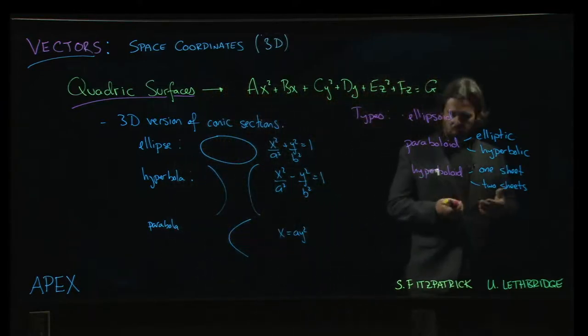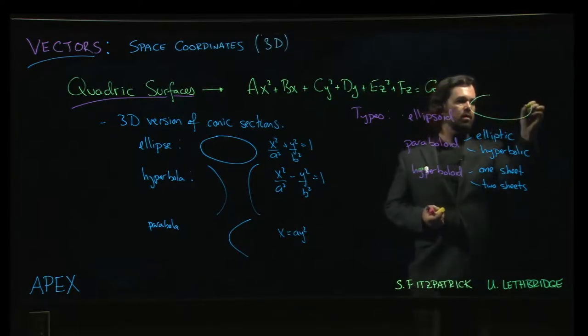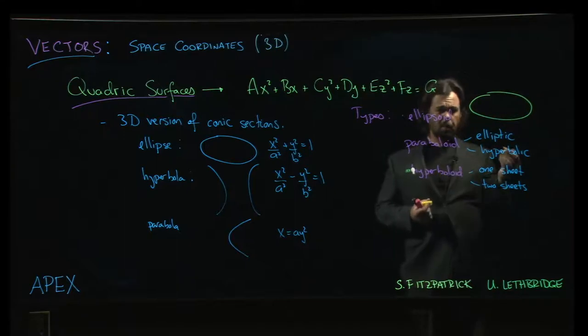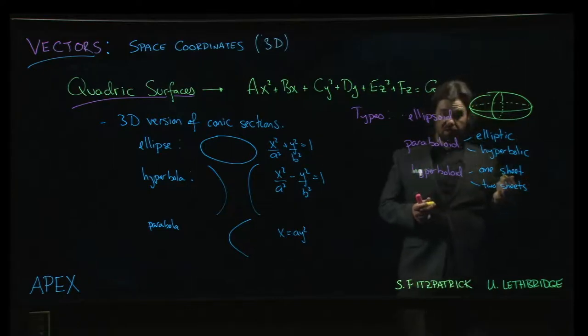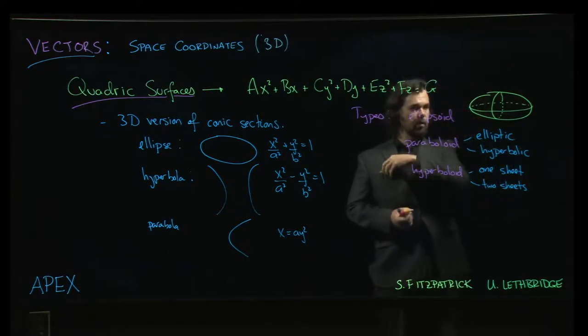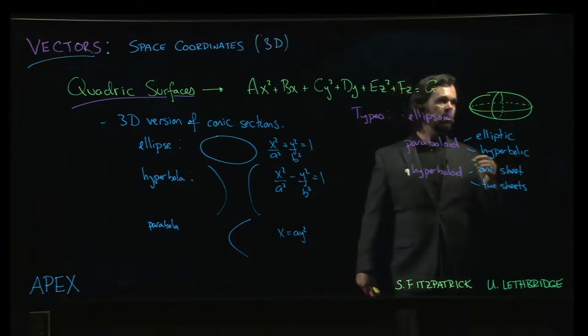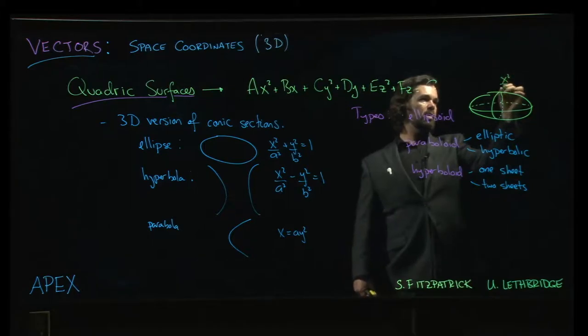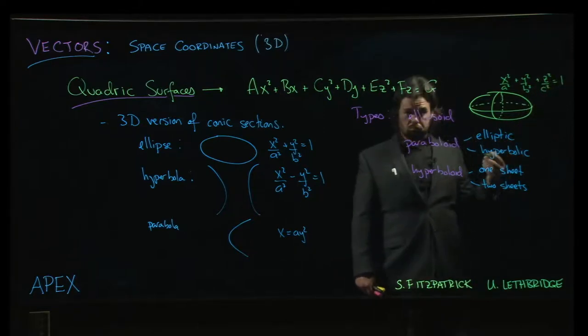For example, an ellipsoid is going to look something like this - like a football shape. A typical equation for an ellipsoid is like the equation of an ellipse, but we add one more variable. So it's going to look like x squared over a squared plus y squared over b squared plus z squared over c squared equals one.